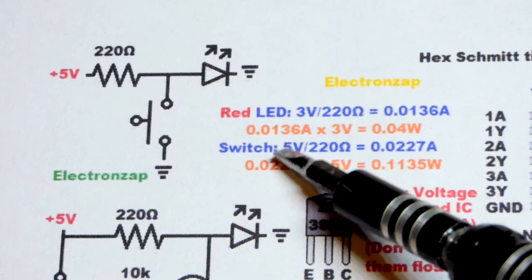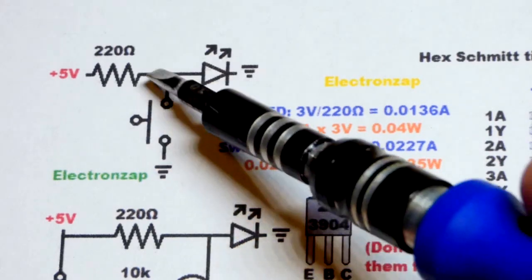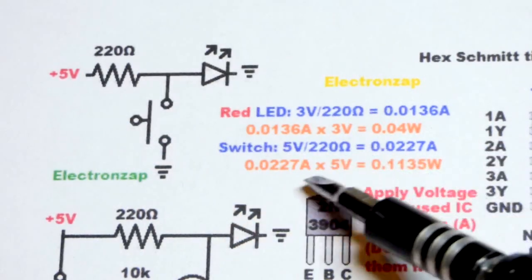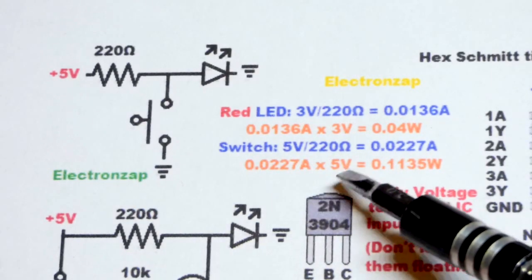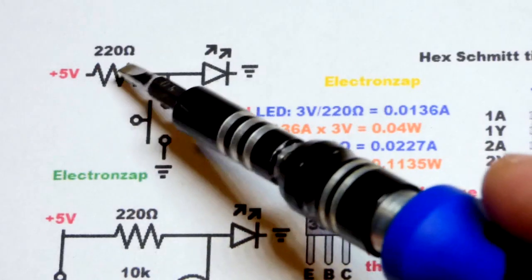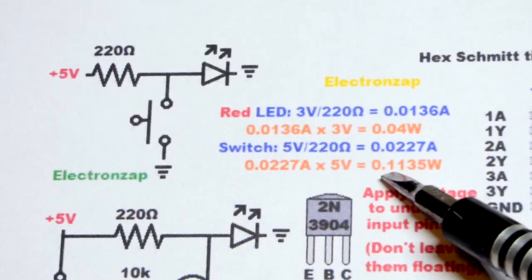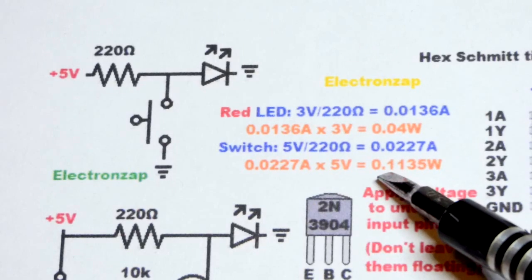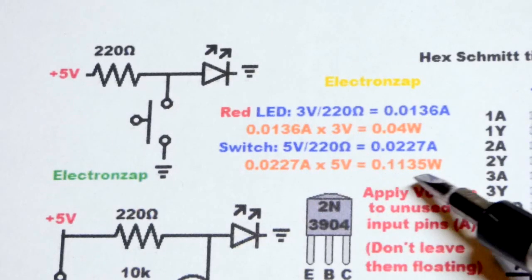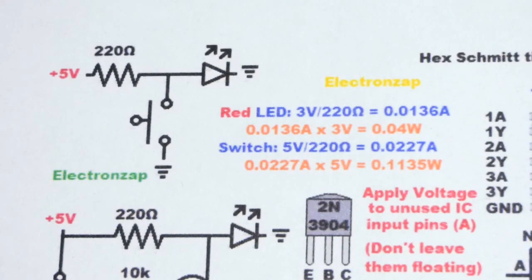Without the LED, just the switch, we have a direct connection to ground across the resistor. We got about 22.7 milliamps of current. Then you multiply that times 5 volts across the resistor. We got about 0.1135 watts, so just a little bit below the 0.125 watts that we want to stay below.